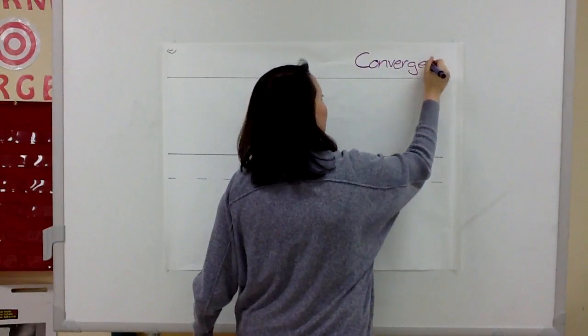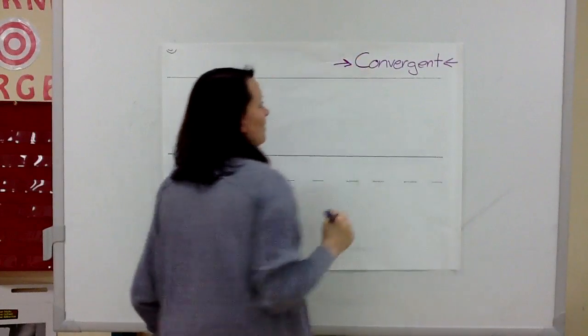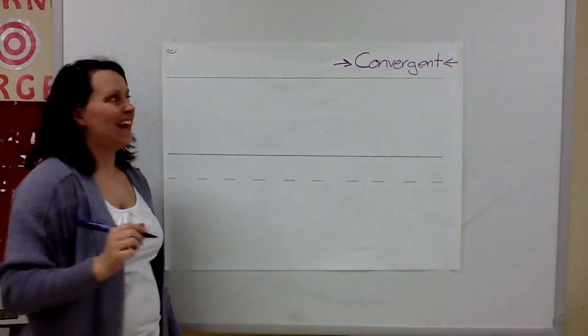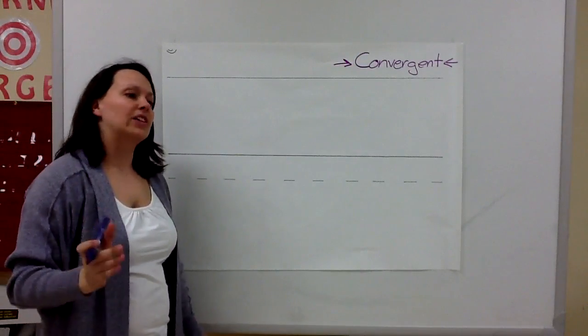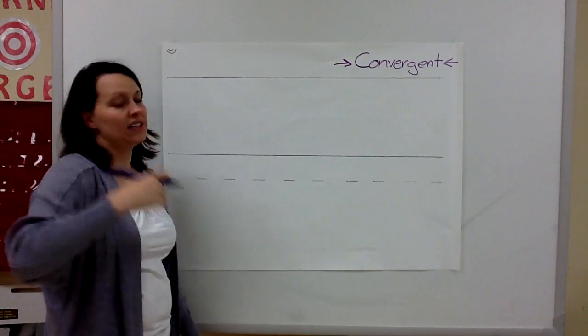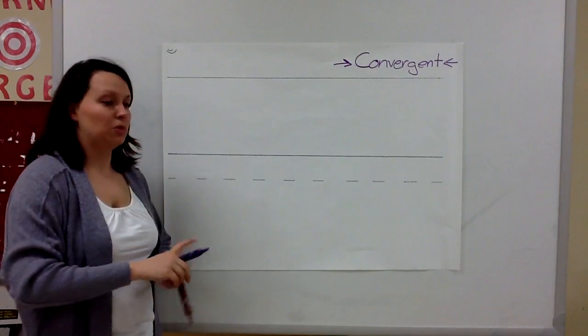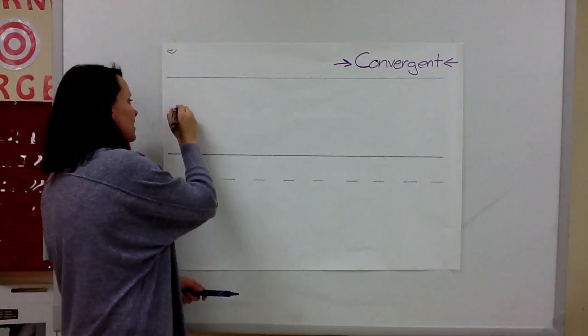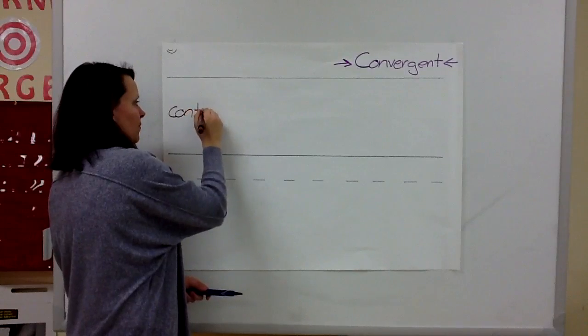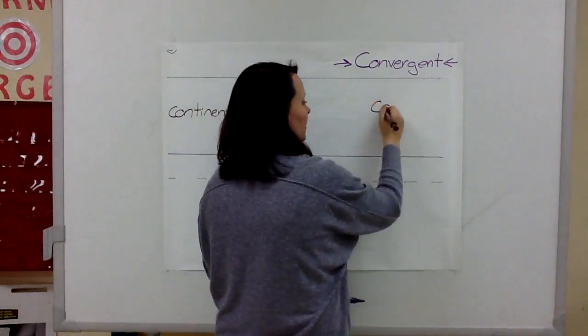Now remember, a convergent boundary is when two plates collide, when two plates hit. Before, we've talked about what happens when oceanic crust hits continental crust, or oceanic crust hits oceanic crust. Today we're going to talk about a very special one that occurs when continental collides with continental.